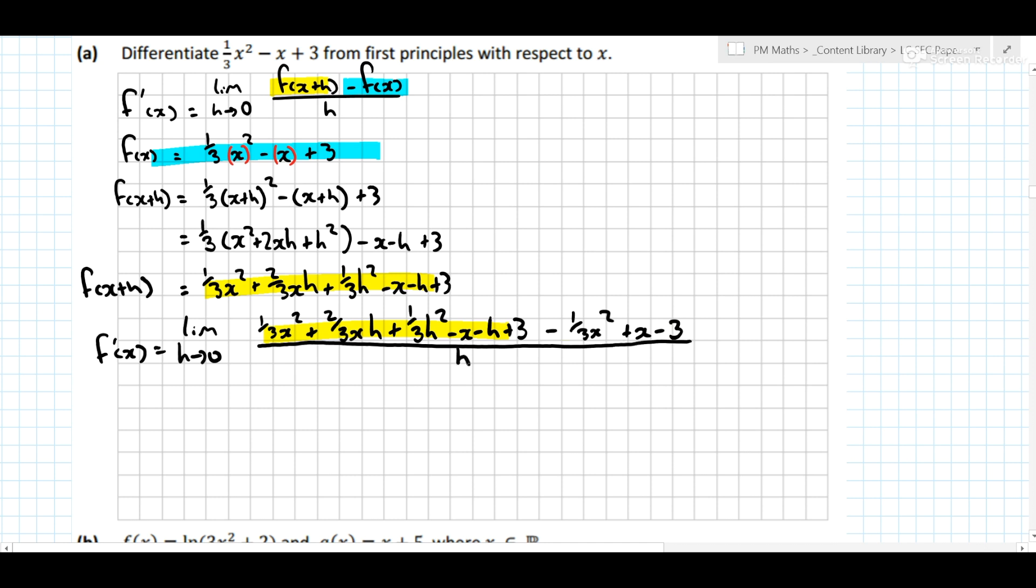Now a lot of people will make the mistake and put in h is equal to zero now, but if you just do me a favour and write 2 over 0 into your calculator, you'll get math error. You can never, ever, ever divide by zero. The world will explode if you divide by zero, so don't ever do it.